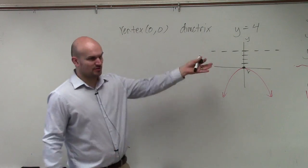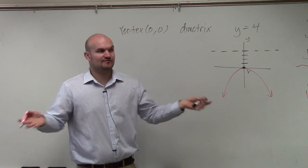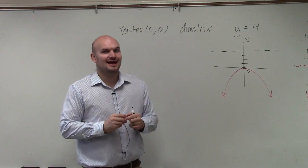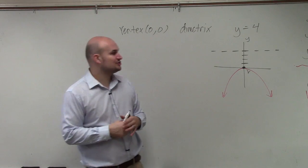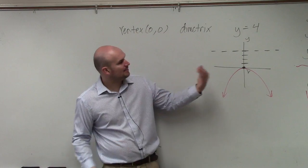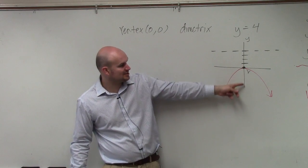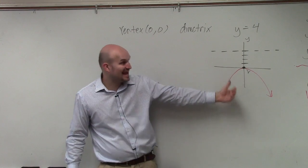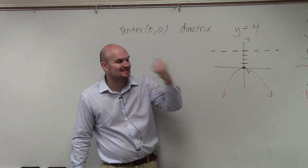It doesn't open to the right. It doesn't open to the left. So therefore, we now know which variable should be squared. X should be squared. And we also should know what should be our value of p, which is going to be the distance from our vertex to our focus, is going to be negative. We want to make sure because we're going down.